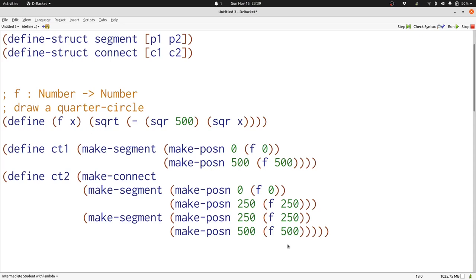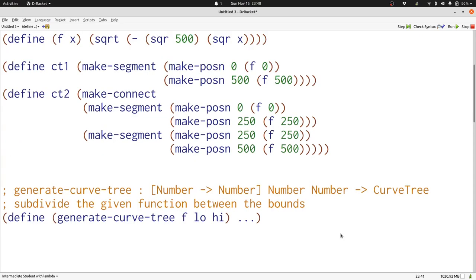Let's see how to make this into a function that we might be able to write. Here's the beginning of generate curve tree. We're going to take in a function like f and two numbers here like 0 and 500. Then we're going to keep generating a curve tree until we get as accurate as we want it to be. We'll think about when that's going to be accurate enough in a second.